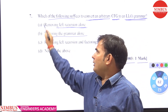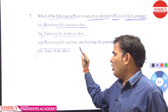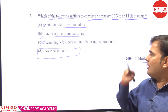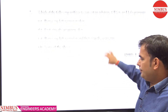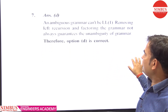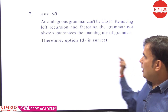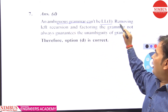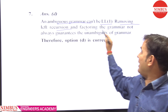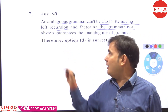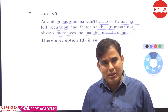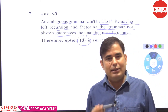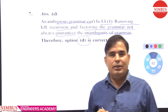Option D is correct. An ambiguous grammar can't be LL(1). Removing left recursion and factoring the grammar does not always guarantee the unambiguity of the grammar — the grammar can still be ambiguous. That's why option D is correct.